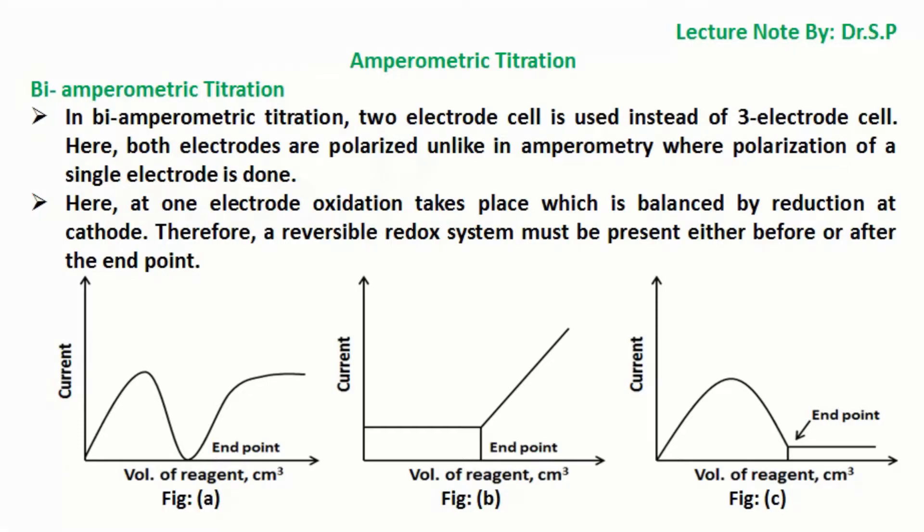And the curve C represents a case which is reverse of case B. In this system reversibly behaving system is titrated against irreversible system. Thus, the current after end point remains zero. For example titration between iodine solution and thiosulfate solution.